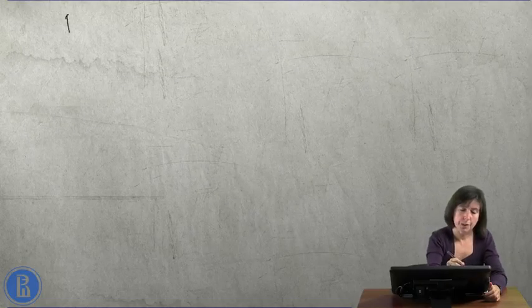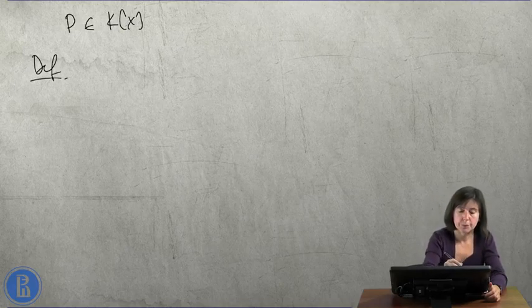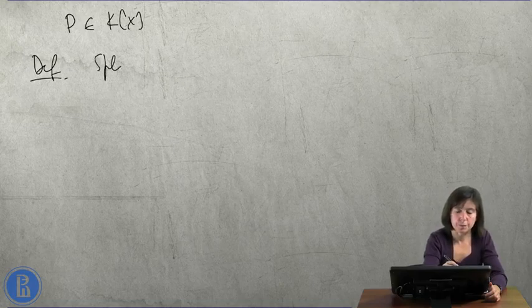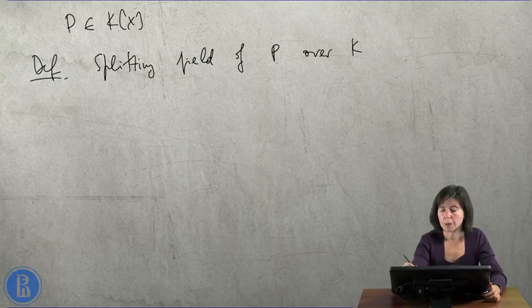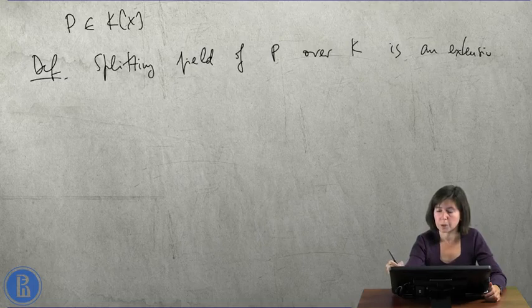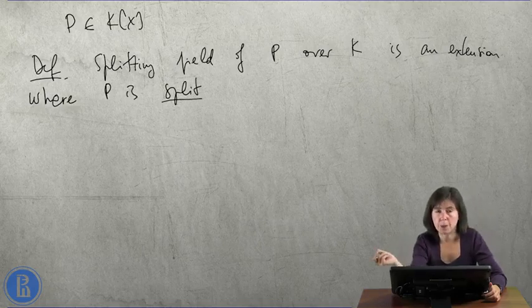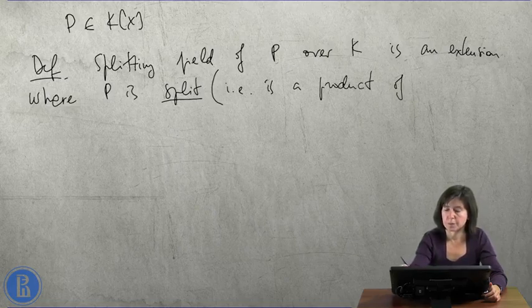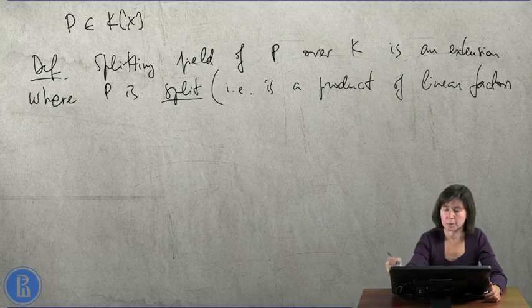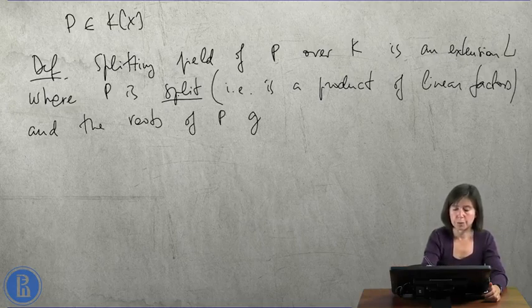Splitting field. P now is some polynomial with coefficients in k, not necessarily reducible. A splitting field of p over k is a field, an extension, where p is split, that is to say,